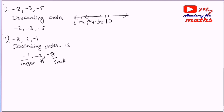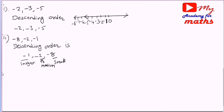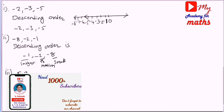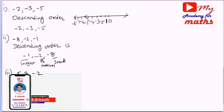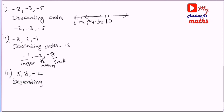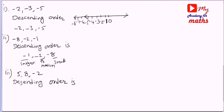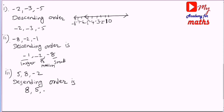This is the largest, this is the smallest. Descending order goes from largest values to smallest values. Now third bit: 5, 8, minus 2 in descending order. The largest is 8, then 5, and the smallest is minus 2.